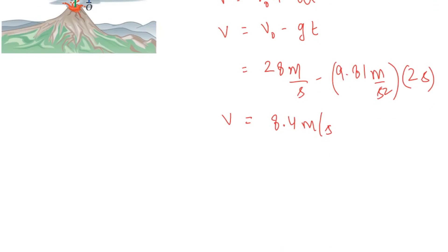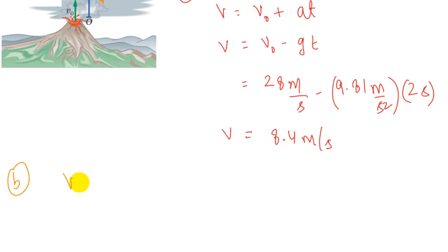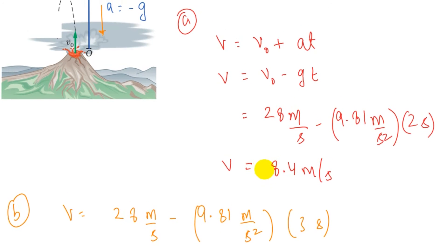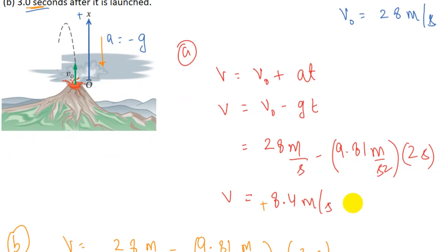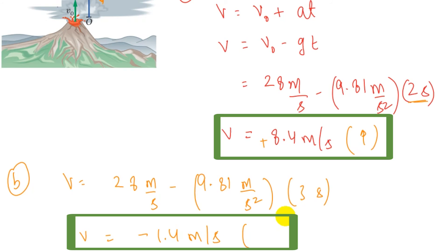For part b at t = 3 seconds: v = 28 m/s - (9.81 m/s²)(3 s) = -1.4 m/s. The negative sign indicates the lava bomb is now moving in the downward direction at t = 3 seconds.